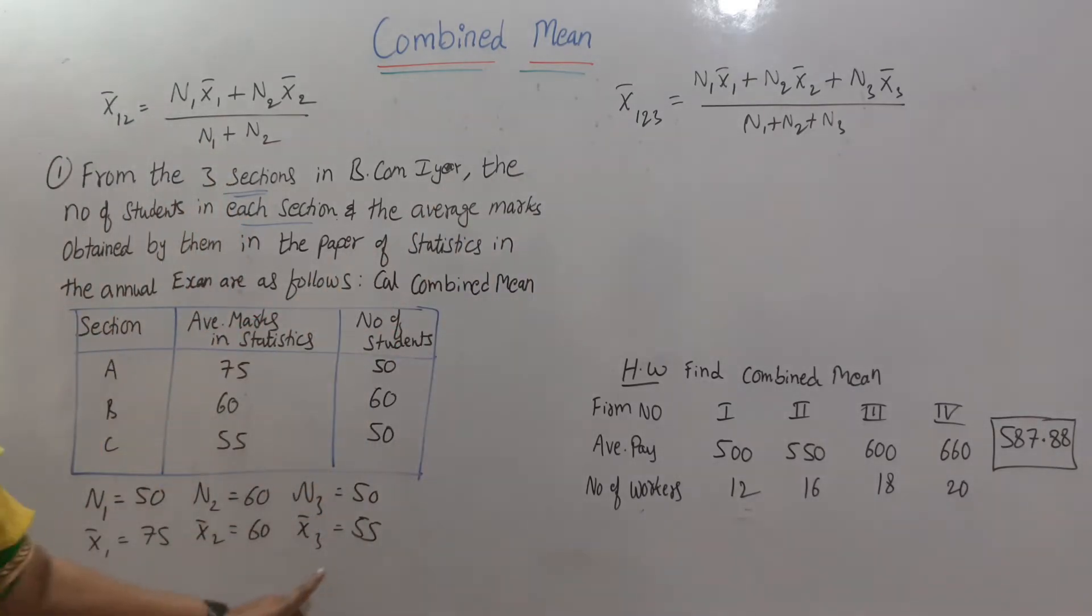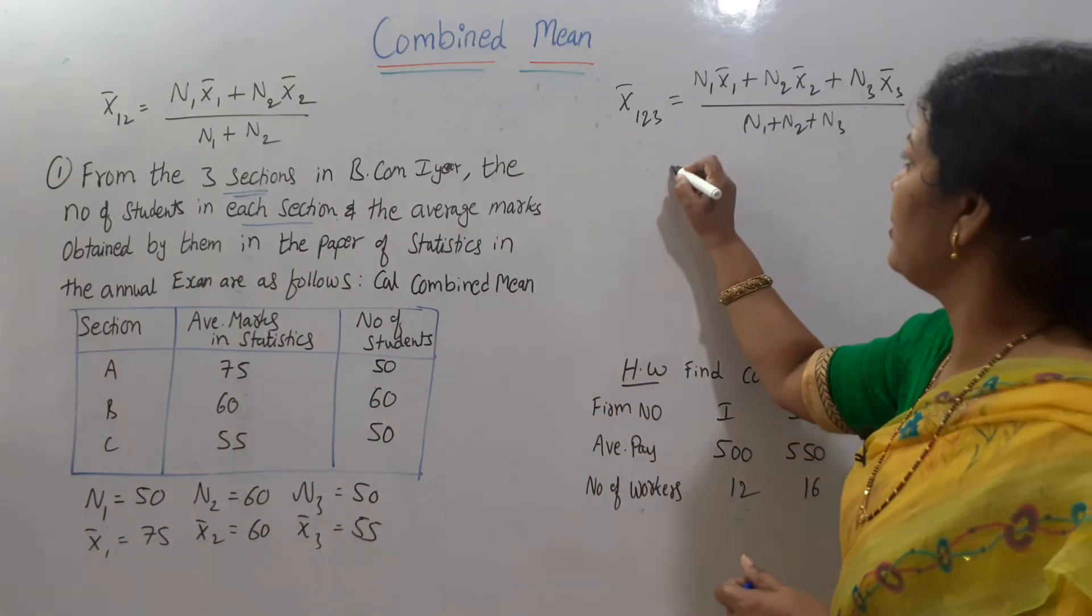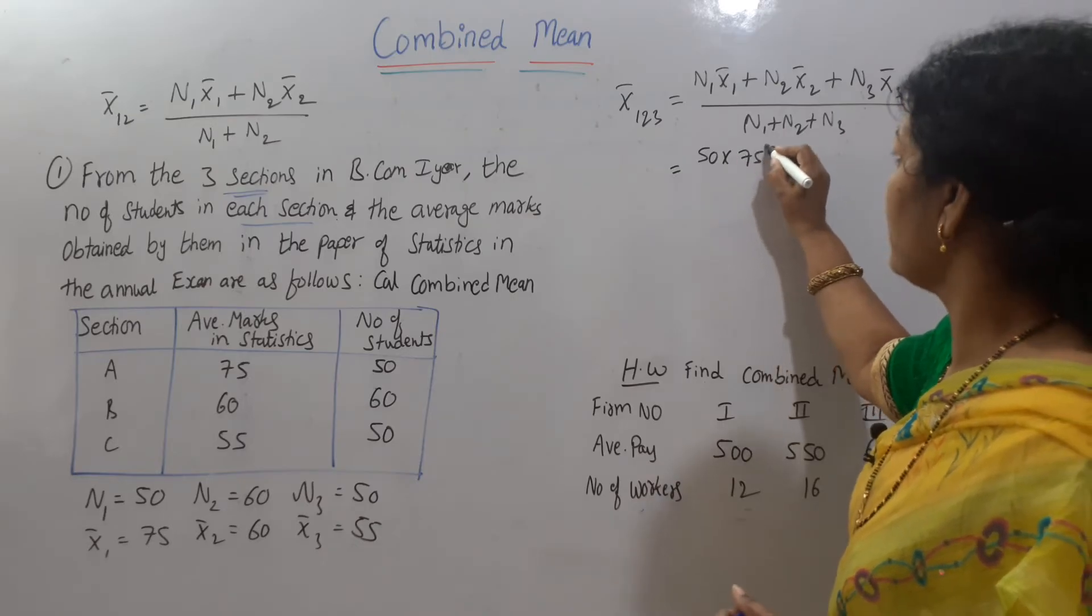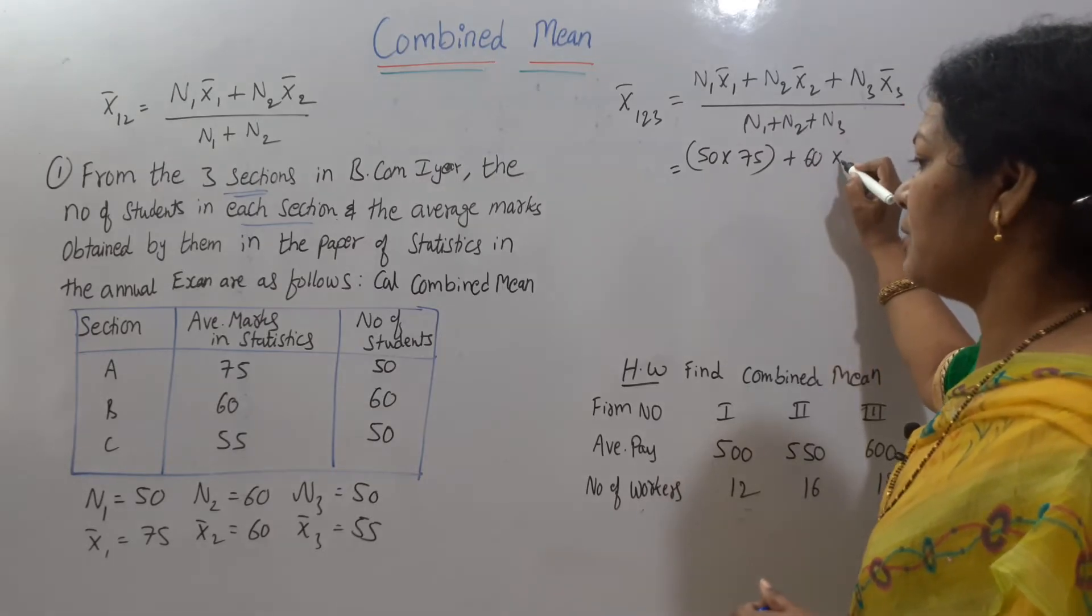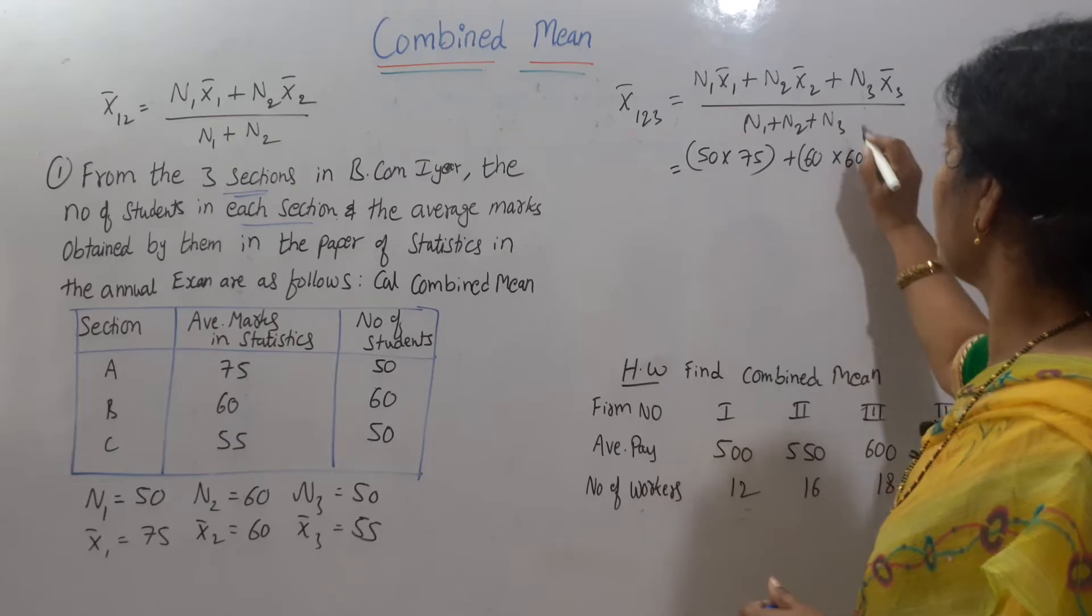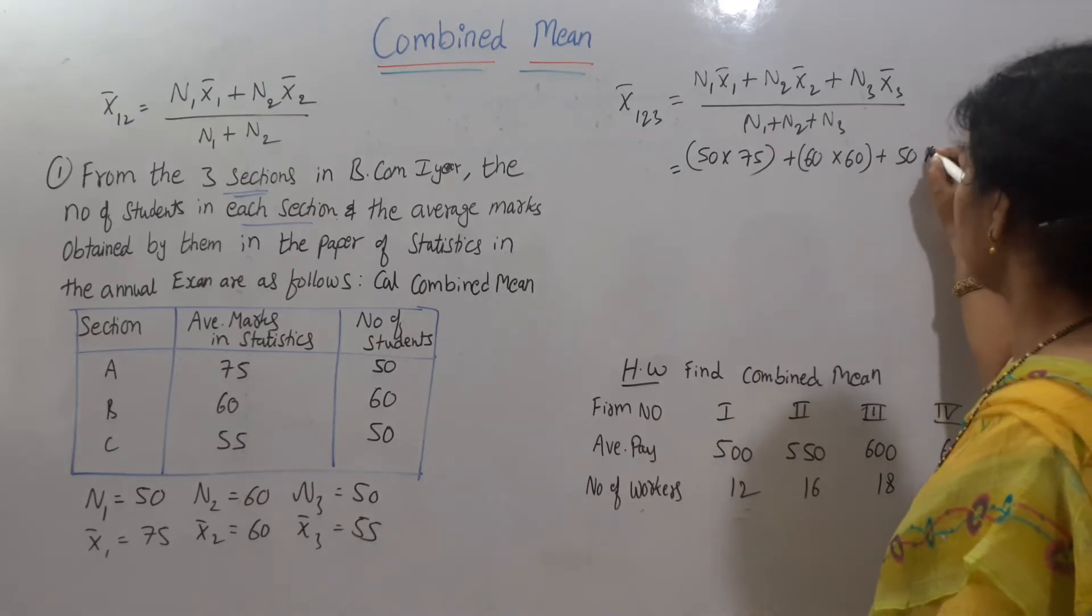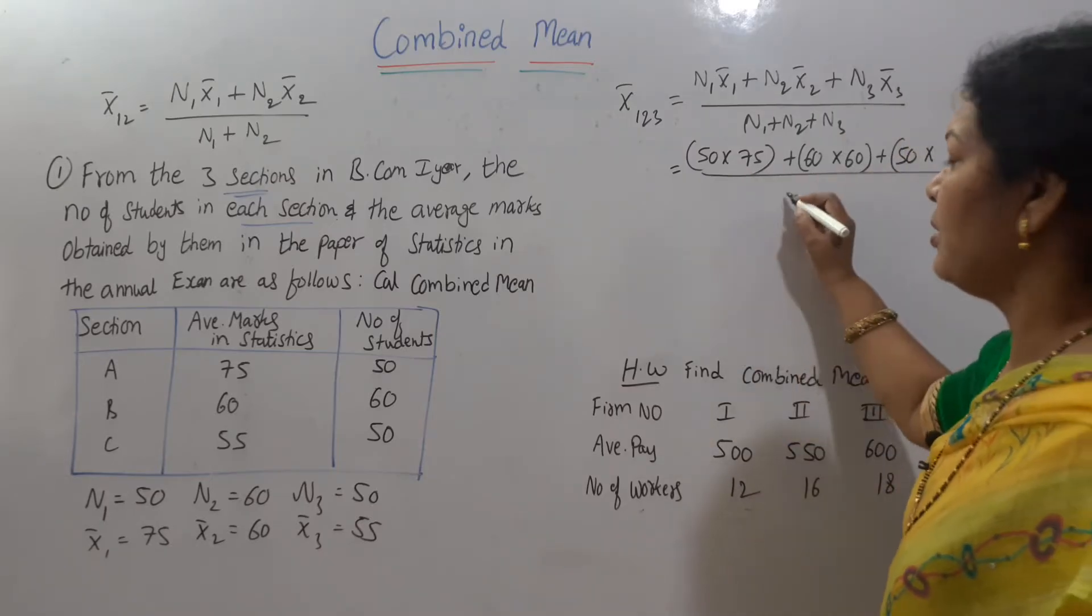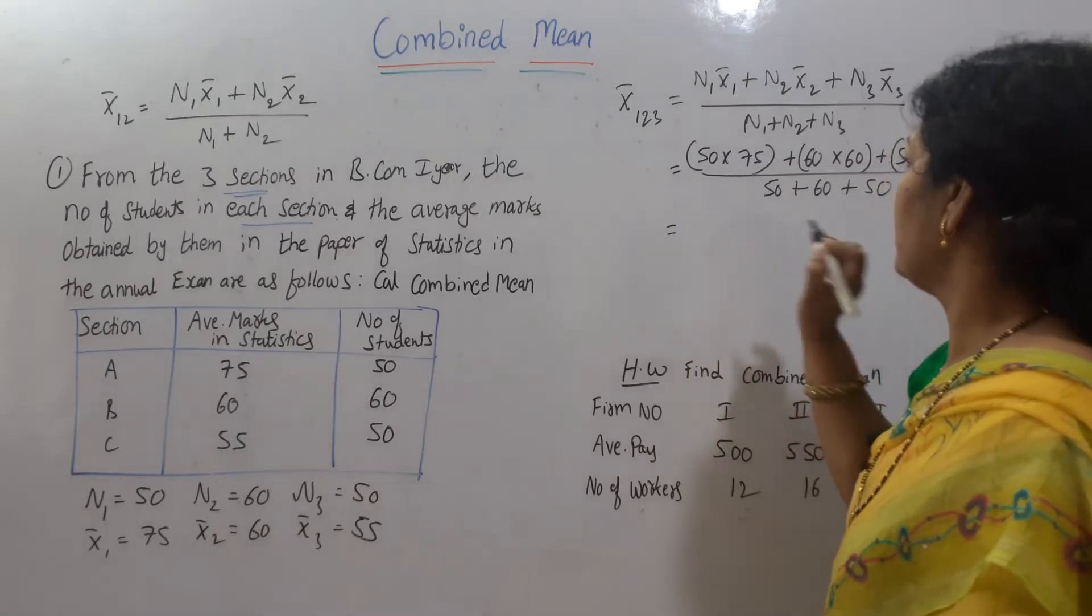After writing the formula, you can write even this one also very clear. Another step of calculation. Now you know everything, just write it in the formula. n1 is here how much? 50, 50 into X bar 3 is 55, plus n2 is 60 and X bar 2 is here 60. Carefully we have to write. Then n3, n3 is here 50, you can see here also, 50 into X bar 3 is 55, divided by n1 plus n2 plus n3. n1 is 50 plus n2 is 60 and n3 is 50.